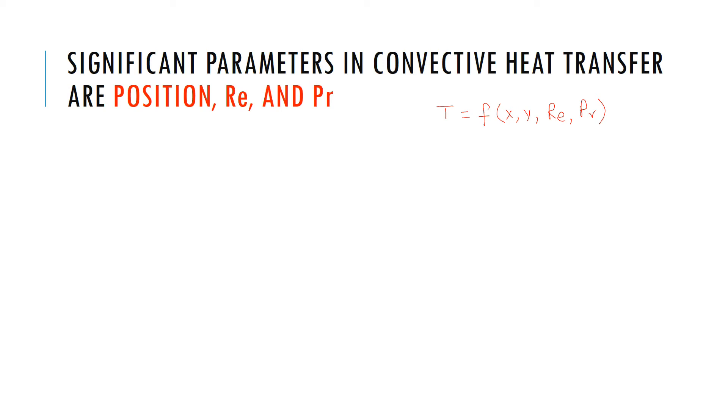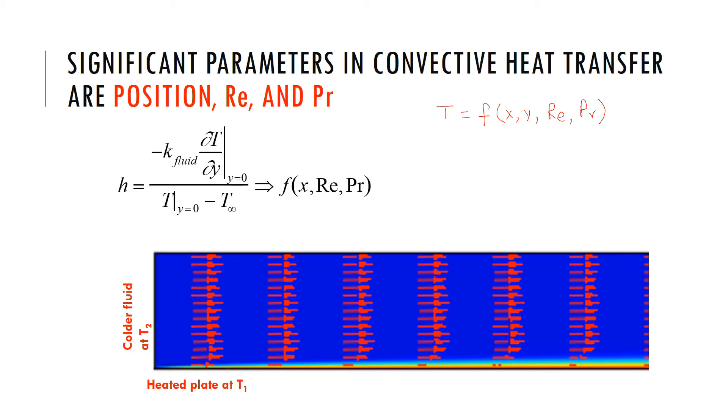So, what are x, y? So, x, y, if I think of again flow over a heated plate and colder fluid flowing over it, so x is my distance this way and y is the vertical distance from the wall.